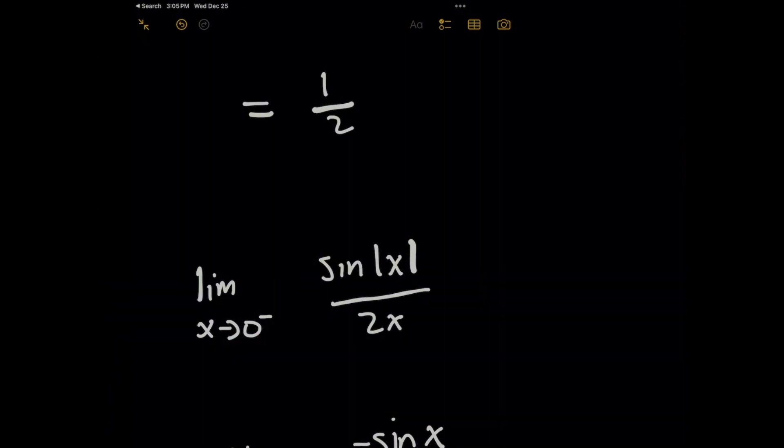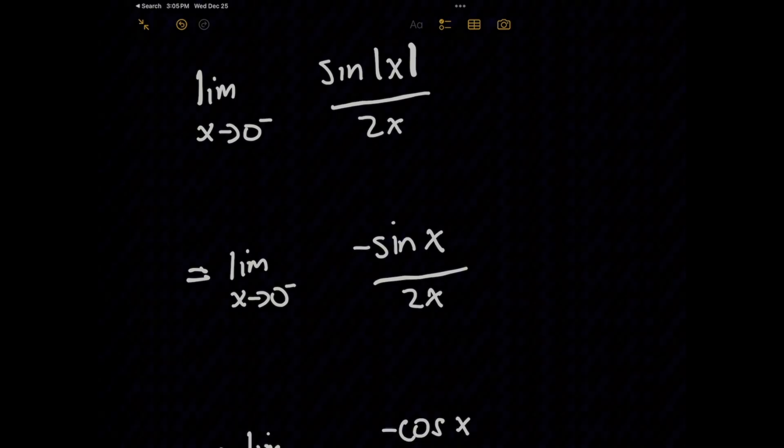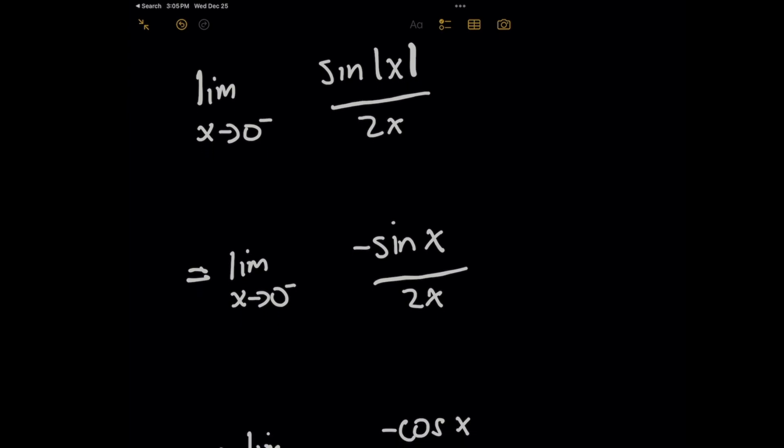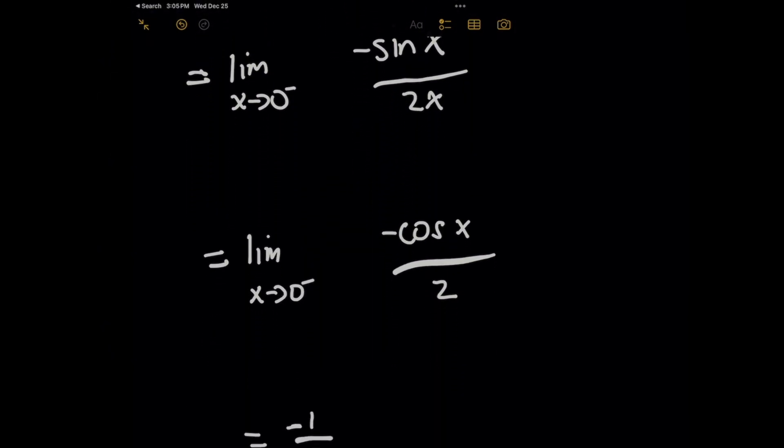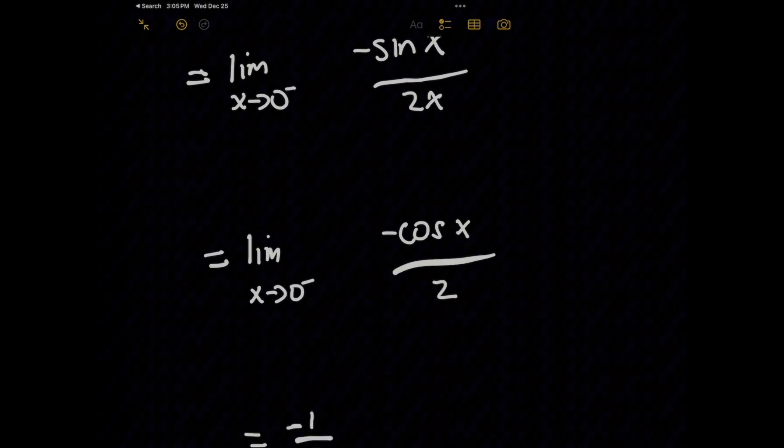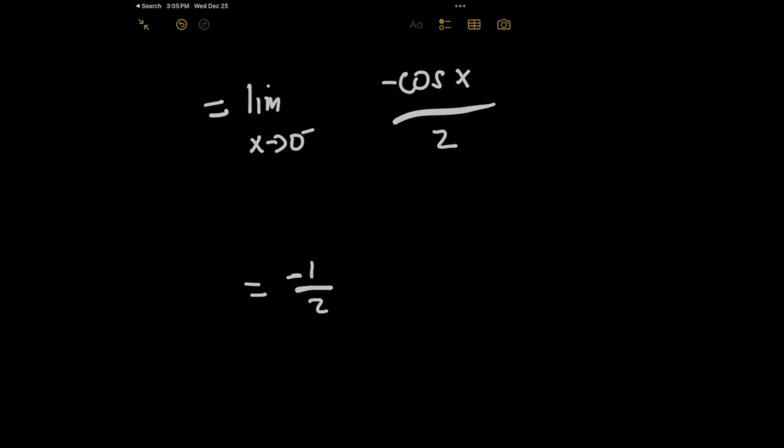Because of the work we did above, remember, we can rewrite sine of the absolute value of x on the numerator as negative sine of x. So once again, I'm going to use L'Hopital's rule here, I'll take the derivative of the top and bottom. And this will give me this new limit expression where I've got negative cosine of x all over 2. Now check this out, when you plug in zero here, you don't get one half like we did before, you get negative one half.